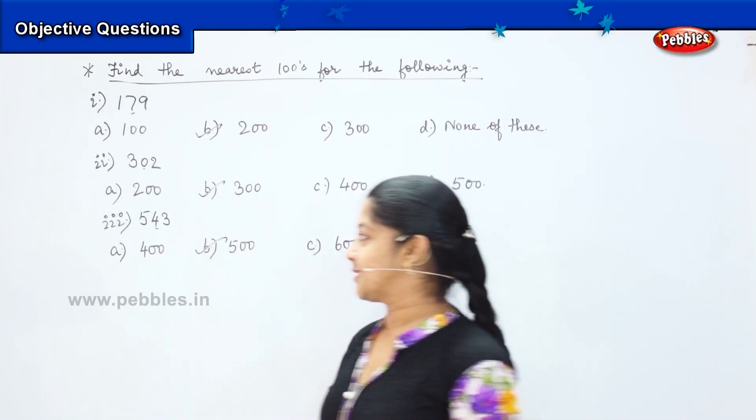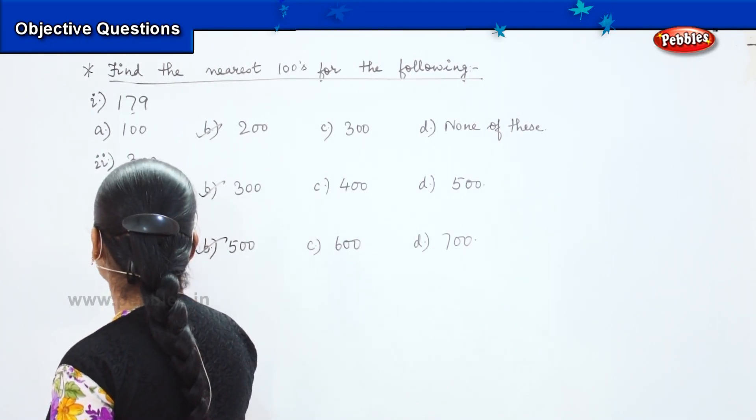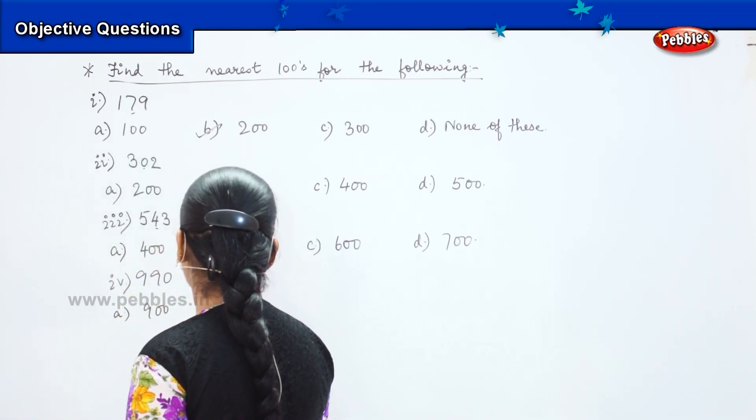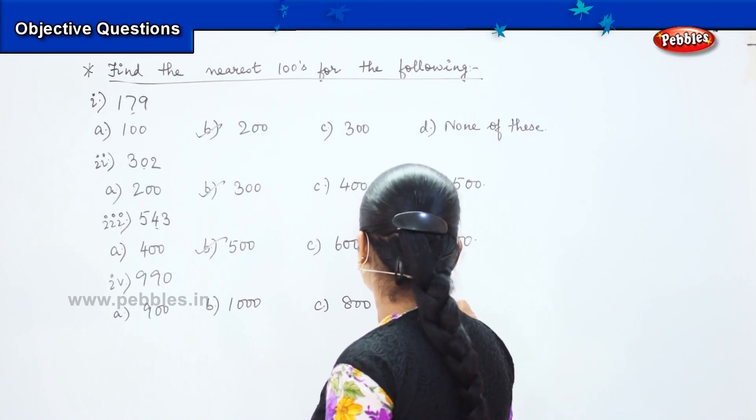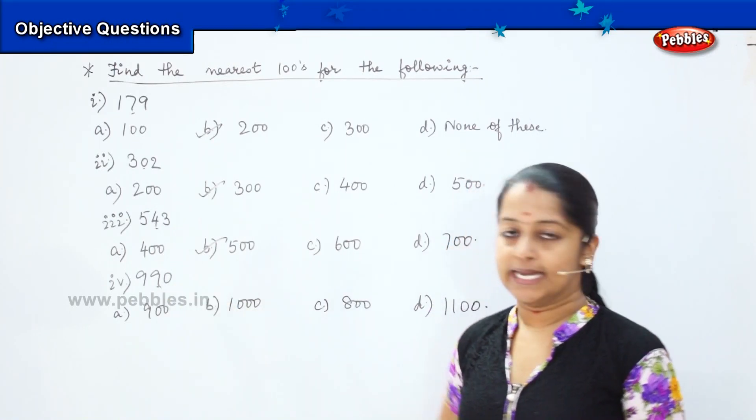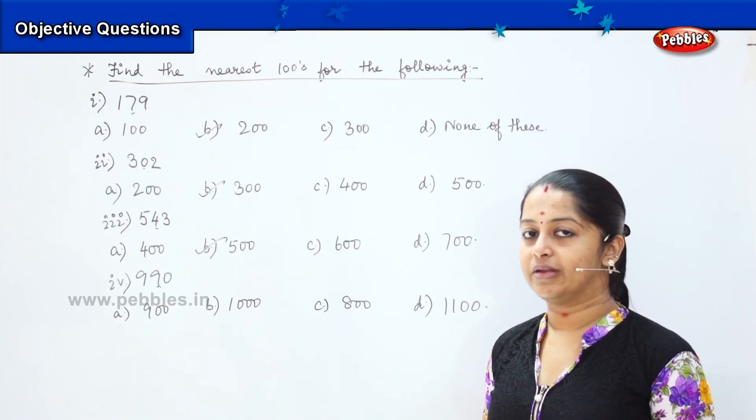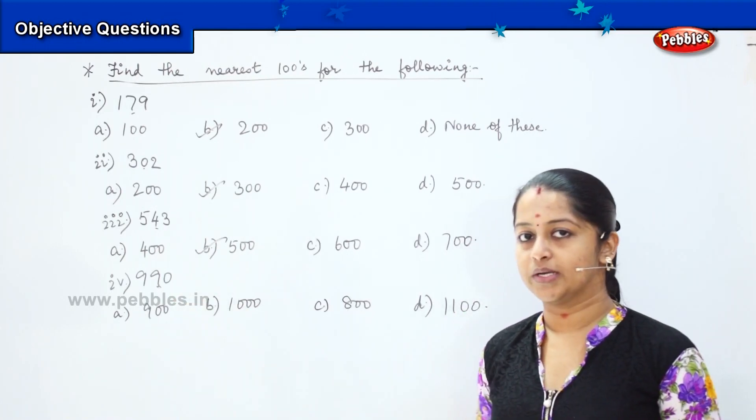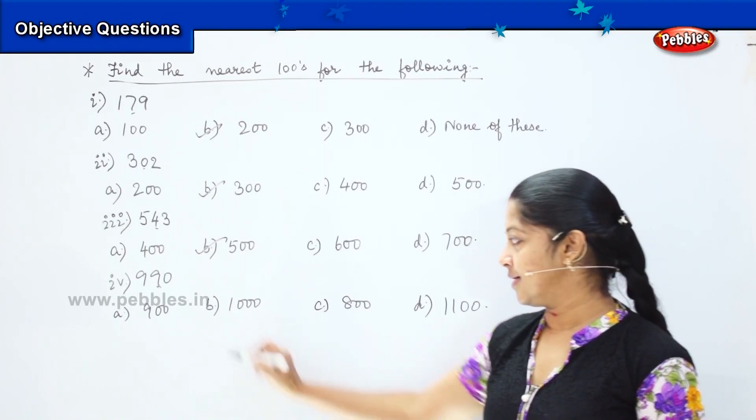Here is your next question. The next question says 990 and my options are A, 900, B, 1000, C, 800, D, 1100. What is this digit? It is 9 and it is greater than 5. So I will be converting it to the succeeding nearest hundred. After 900 what is the next number which will come? 1000, right? Where do you find 1000 here? Good. It is option B. The nearest hundreds value will be 1000.